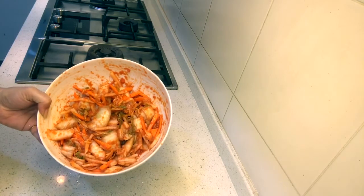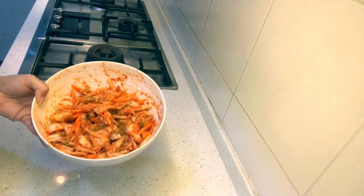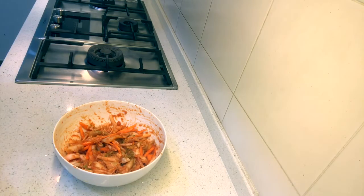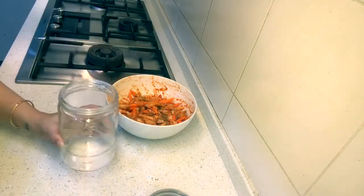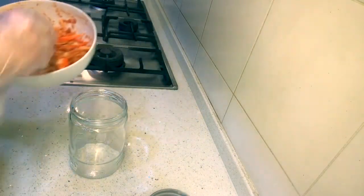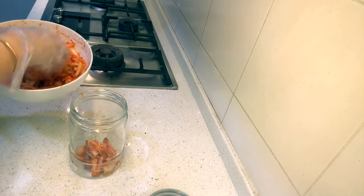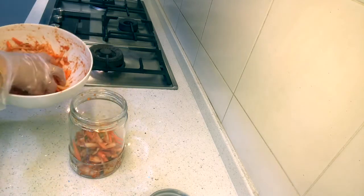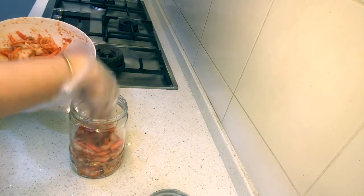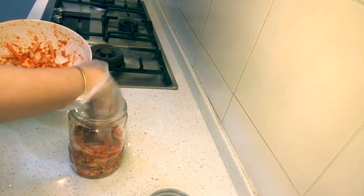Okay, so now the vegetables are all coated very nicely with the paste and it's looking absolutely yummy. Now is the time to transfer it to the glass jar. So I have taken an airtight glass jar which is nicely washed and dry. Now I'm going to add the kimchi little by little. We have to make sure that we don't fill the jar up completely - it needs to have some room to breathe.